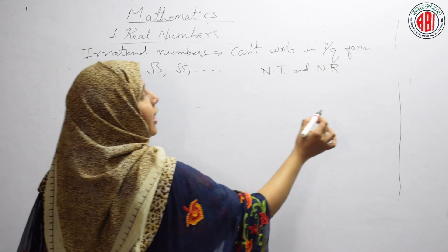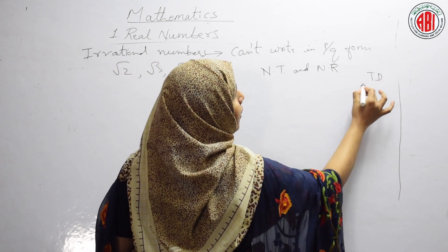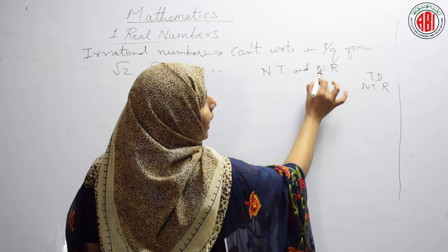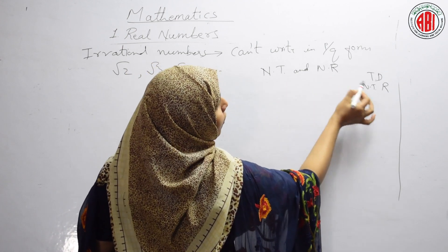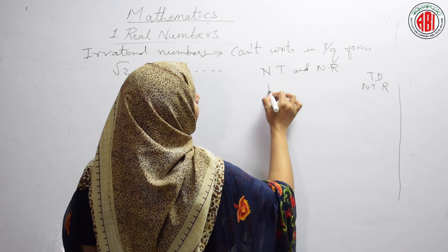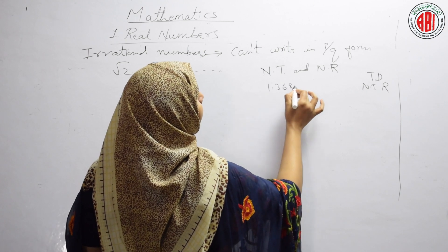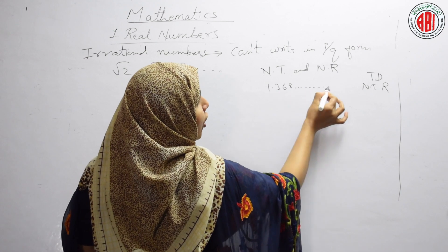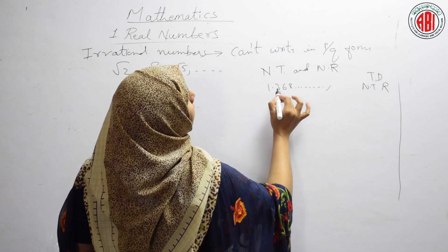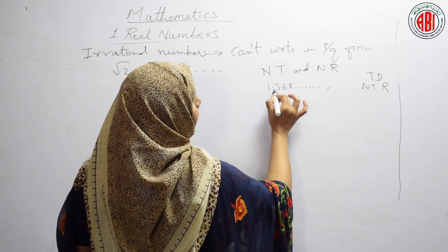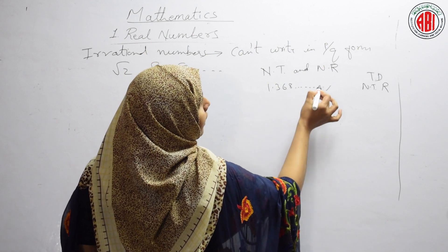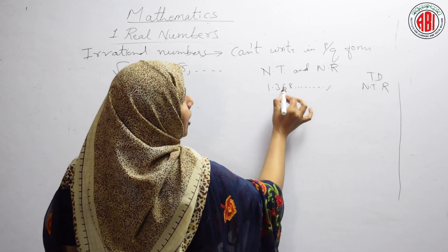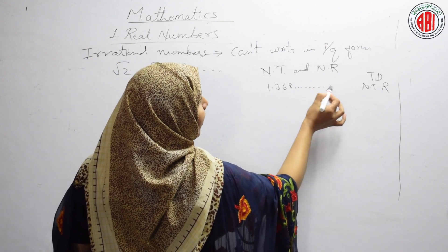In rational numbers we have terminating decimal and non-terminating recurring decimal. But for irrational numbers it is non-terminating and non-recurring. Examples are √2, √3, √5, and so on. For example, 1.368... — the same number is not repeating here. It is non-terminating and will not stop.